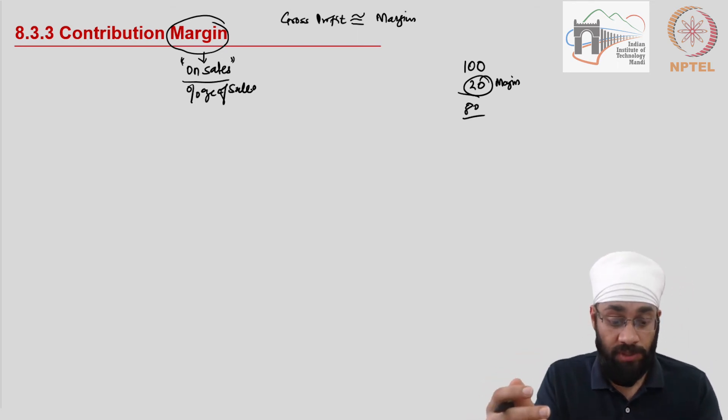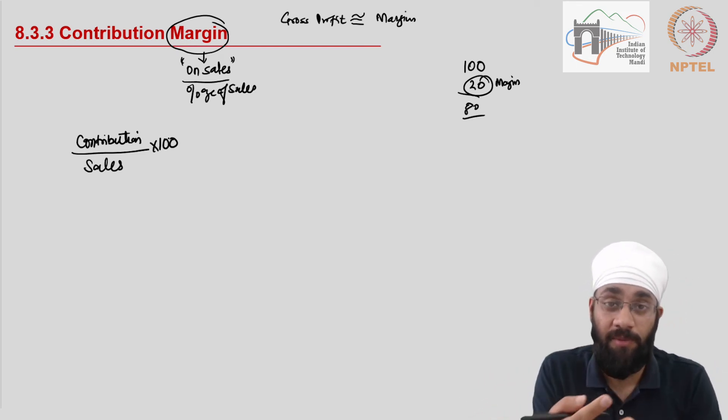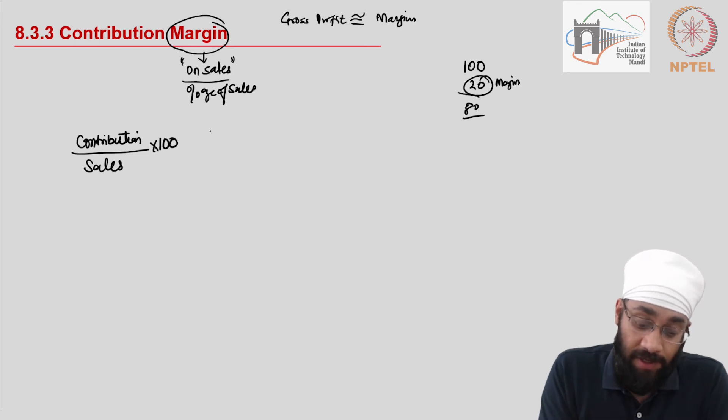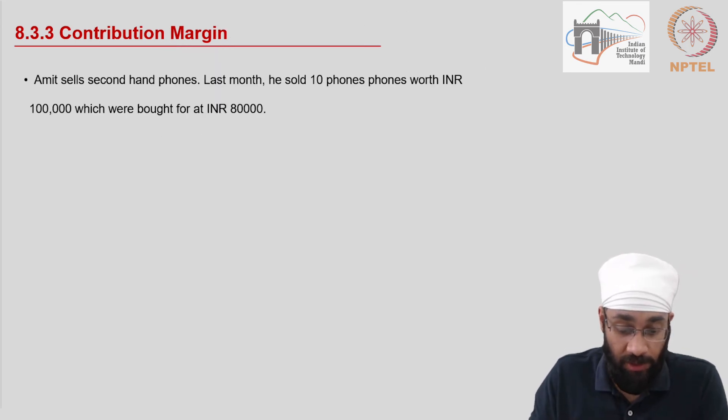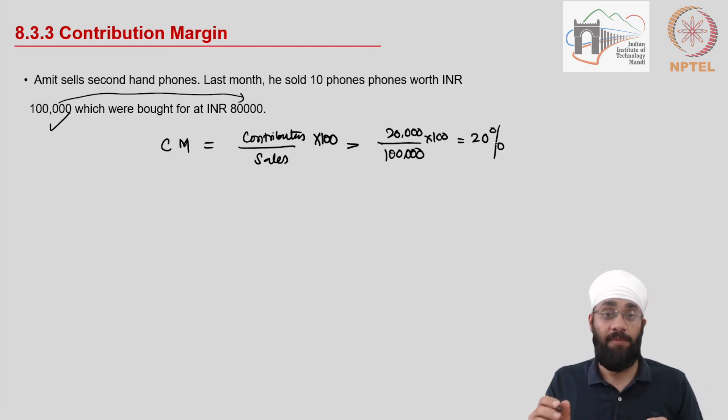Now let's mix these words up: contribution and margin. Which would mean we have to look for contribution and we have to divide this by sales and multiply this into 100. What is the contribution margin? Just like the gross profit margin. So from the previous question now, here the contribution margin is going to be equal to the contribution divided by sales, contribution divided by sales or the revenue, multiplied by 100. What is the sales? Sales is 100,000, 1 lakh. And what is the contribution? 100,000 minus 80,000 is 20. 20,000 into 100, so my contribution margin is 20%.